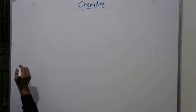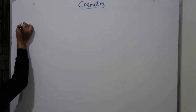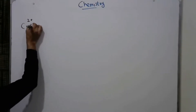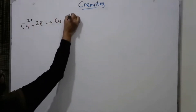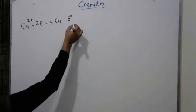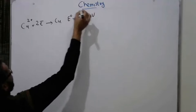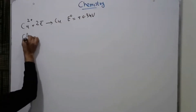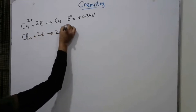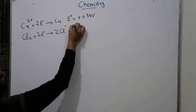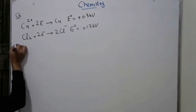The standard reduction potentials of half cells are given. The first reaction: Cu²⁺ + 2e⁻ → Cu, with E° = +0.34 volts. The second reaction: Cl₂ + 2e⁻ → 2Cl⁻, with E° = +1.36 volts.